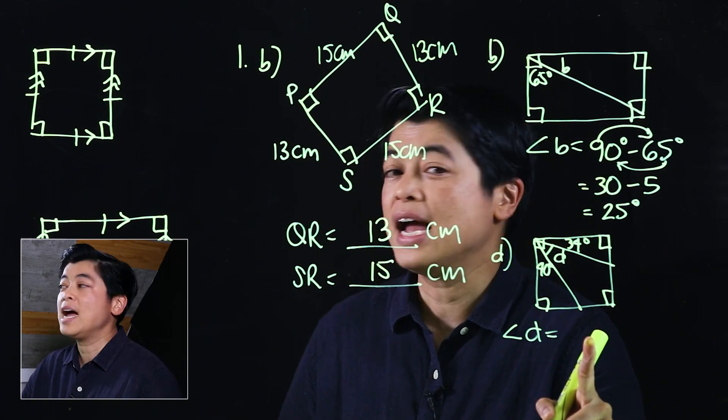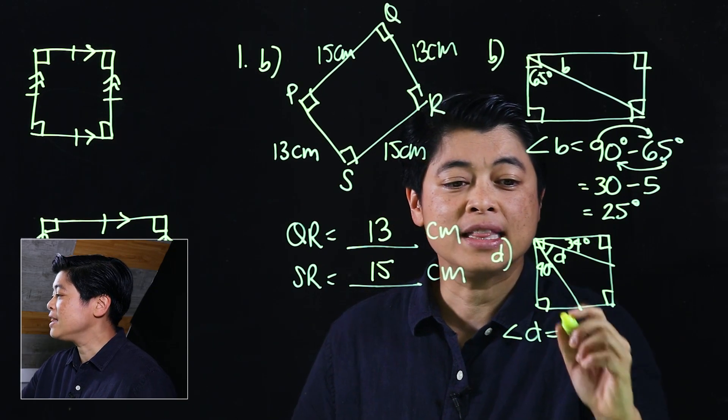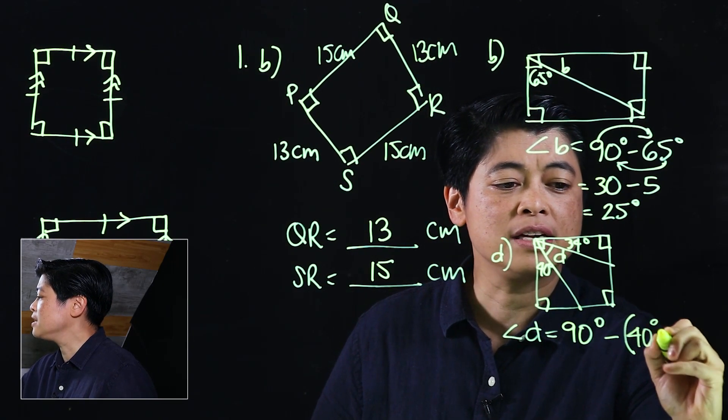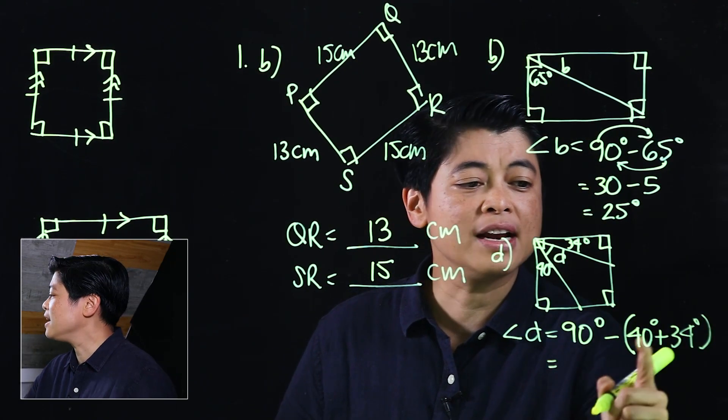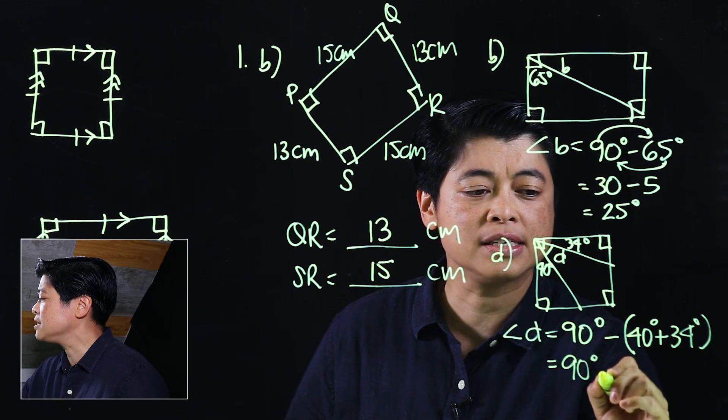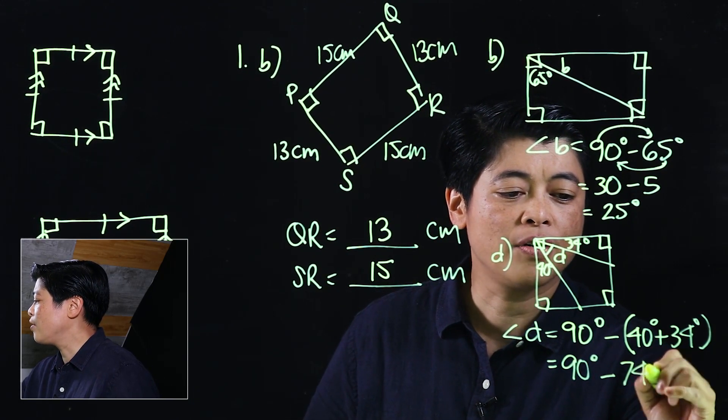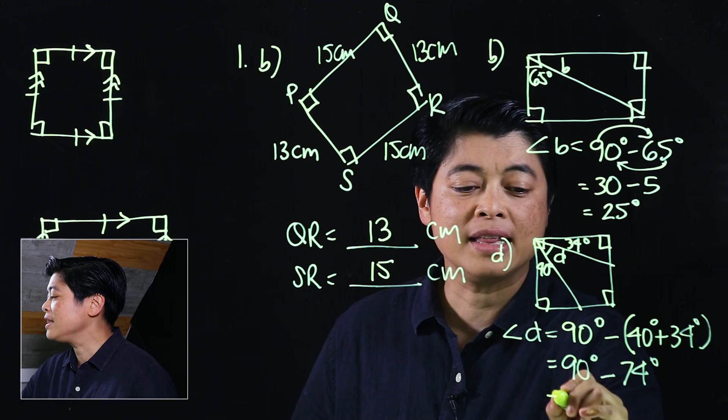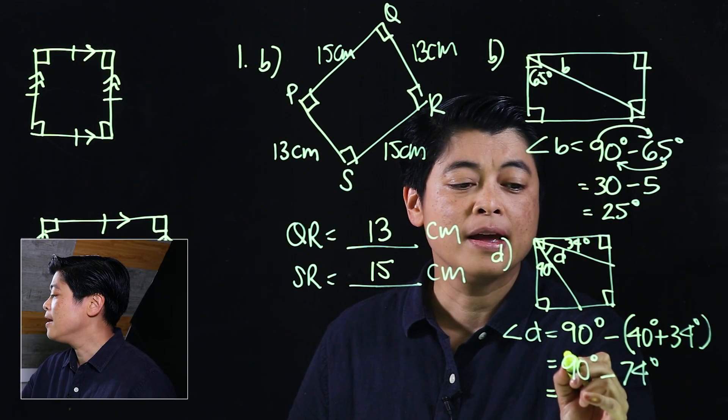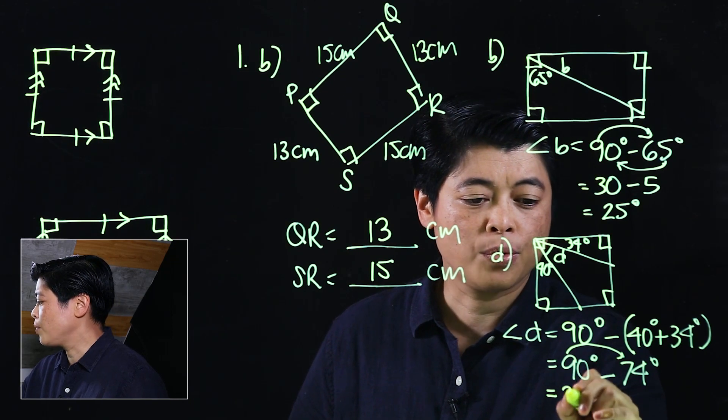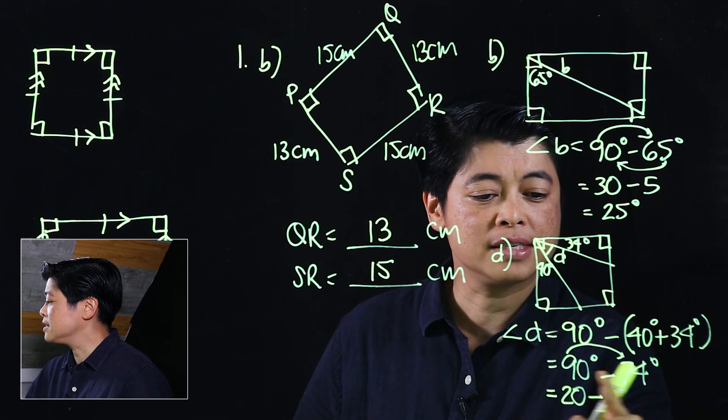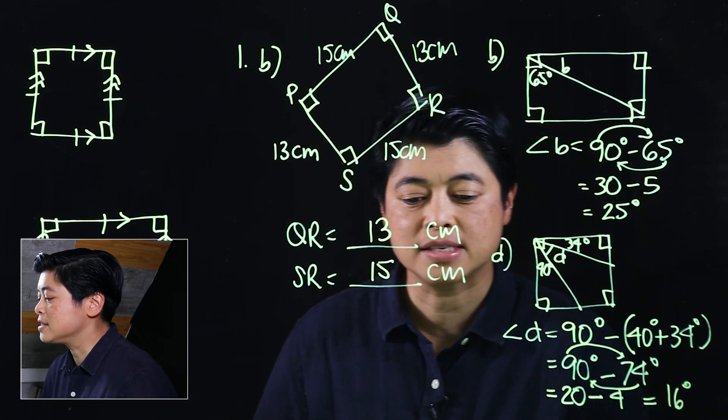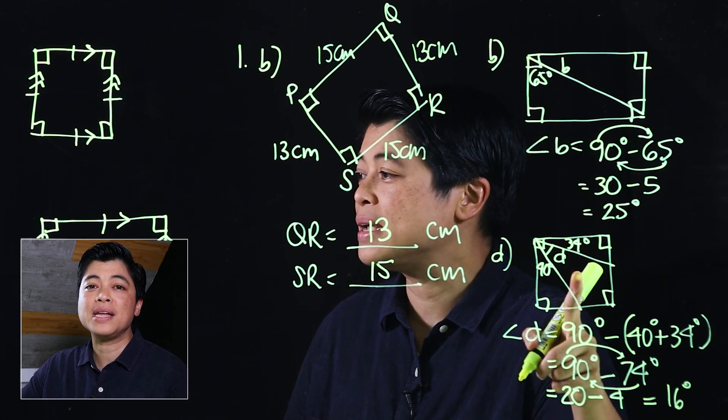In letter D, angle D technically is 90 degrees minus the sum of these two, which is 40 degrees plus 34 degrees. Clearly, this I can do mentally, so that's 90 degrees minus 74 degrees. The kids should be able to do that mentally. Applying the same strategy as above, 90 minus 70 is 20, minus 4 because this is bigger, which means this must be 16 degrees. So the measurement of angle D must be 16 degrees.